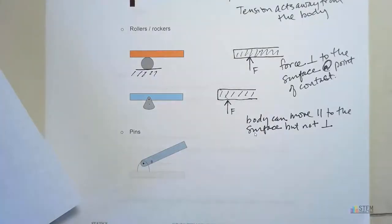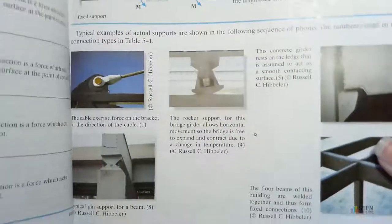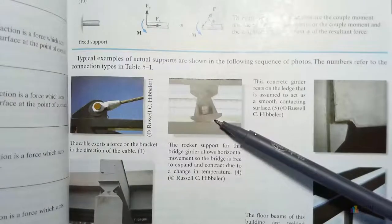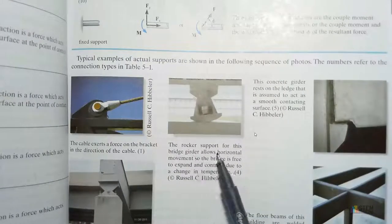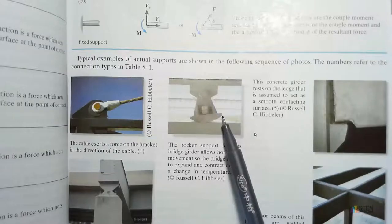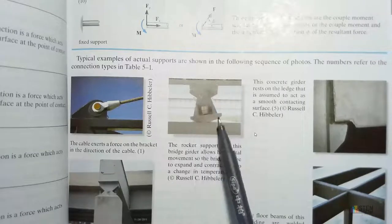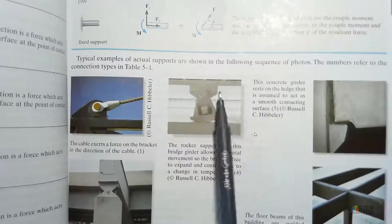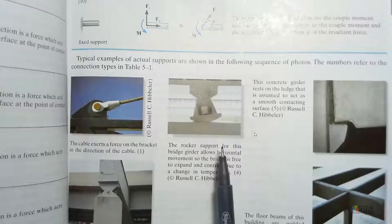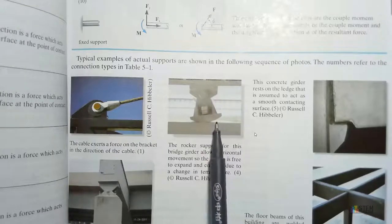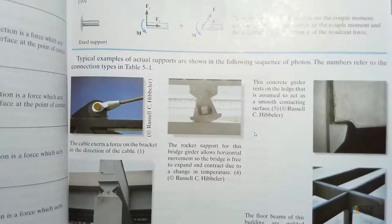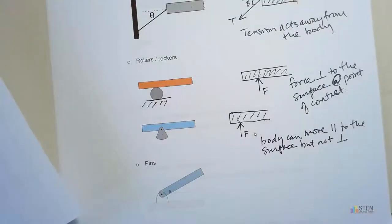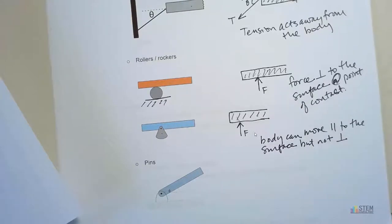The Hibbeler book has an actual picture of a rocker — this is a rocker support for a bridge. It's going to keep the bridge from moving vertically, but it could still have some motion in the horizontal direction. You can see the base is able to rock back and forth like a rocking chair. So rockers and rollers only provide that perpendicular force to prevent vertical motion.